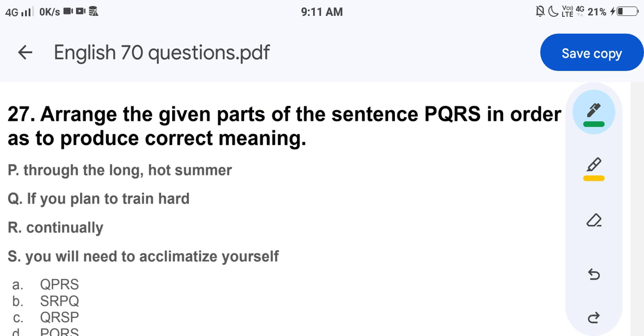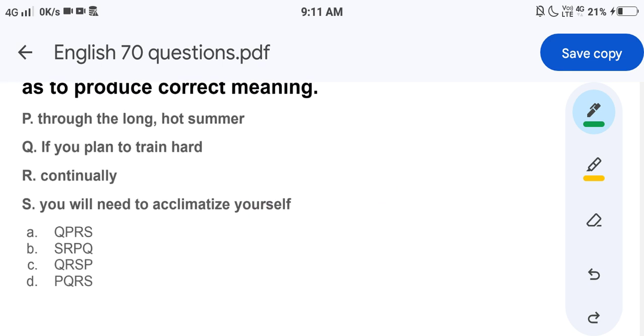Arrange the given parts of the sentence PQRS in order so as to produce correct meaning. Here we have options. First of all, look at these jumbled words. P: through the long hot summer. Q: if you plan to train hard. R: continually. S: you will need to acclimatize yourself. And here we have this sequence.